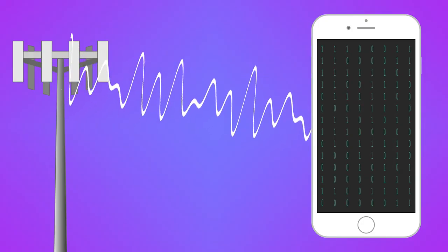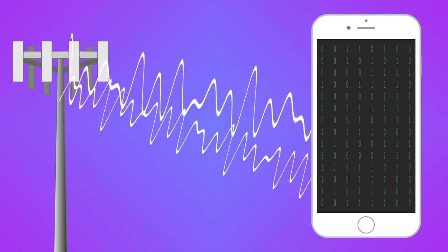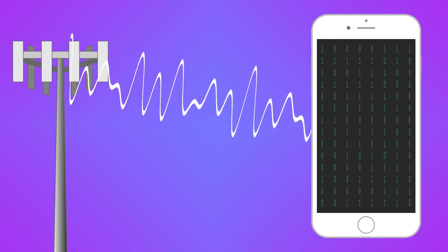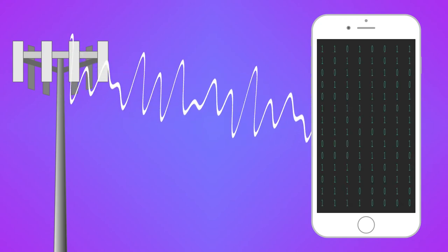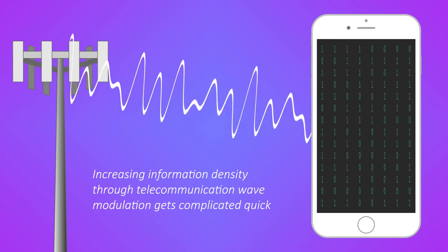Cellular networks use electromagnetic waves to transmit and receive information to and from electronic devices. By altering the characteristics of an electromagnetic wave, information in the form of zeros and ones can be encoded into the waves and then interpreted by an electronic device in order to, let's say, stream a TV show, listen to a song, or load a webpage.